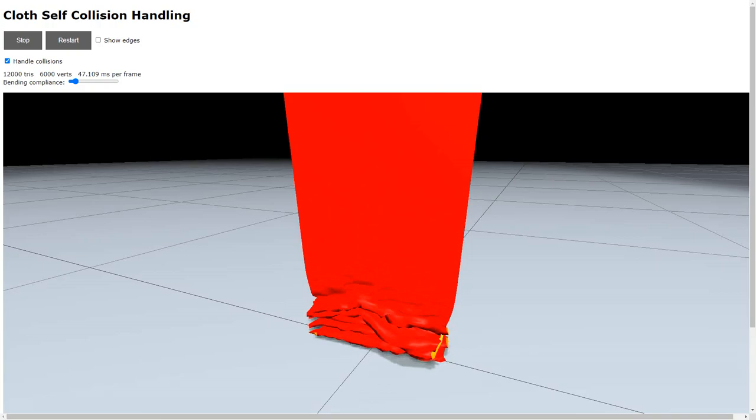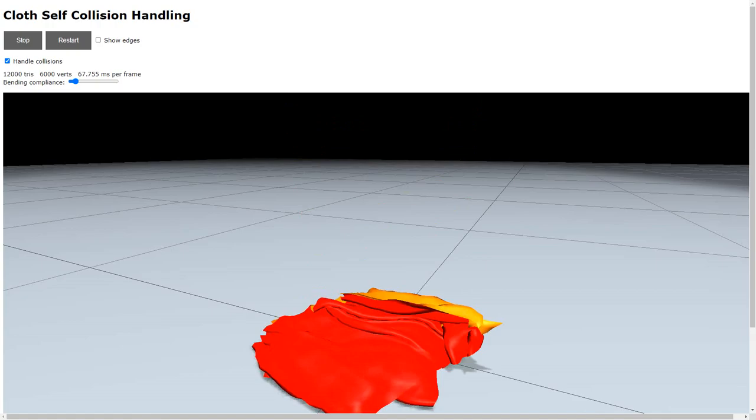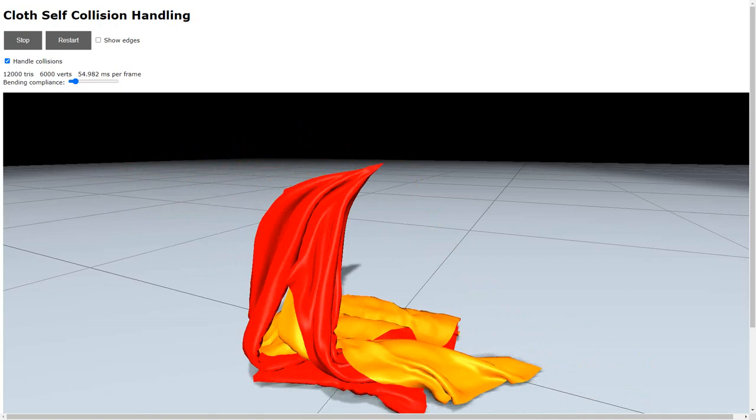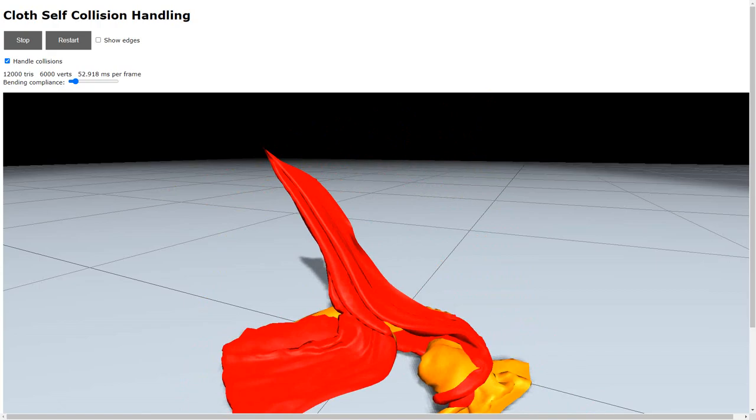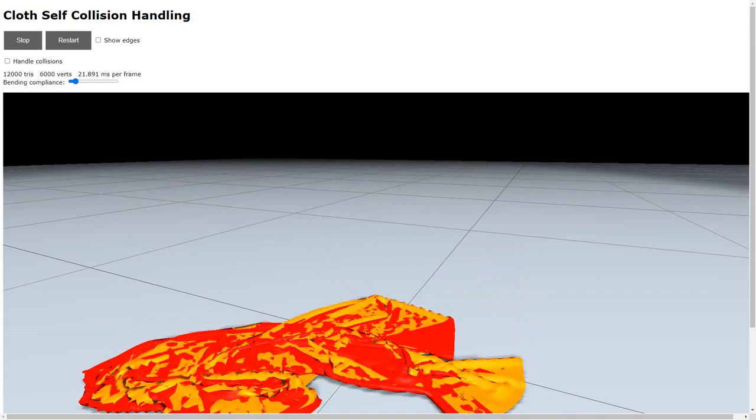This is the final demo. As you can see, we have 12,000 triangles and the simulation runs at about 60 milliseconds per frame. I can pull the cloth and it never self-intersects. In this demo, I can also disable collision handling. As you can see, things look very bad in this case.